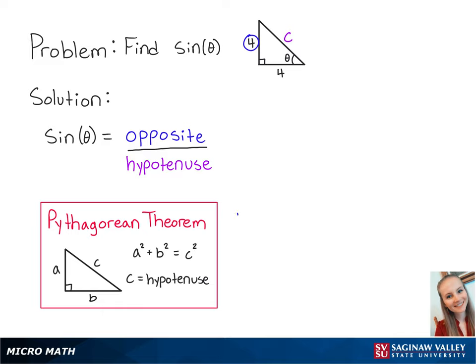Plugging in our values, we get 4 squared plus 4 squared equals C squared. If we simplify the left side, we get 32 equals C squared.